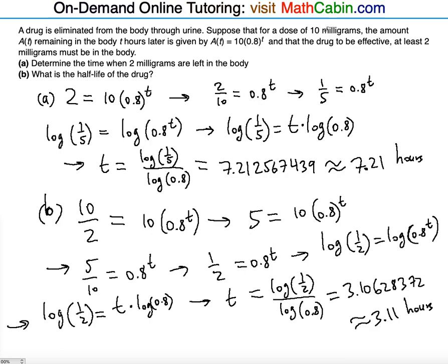The time it takes for one half of the original amount of the drug to remain in the body. So in three hours, there will be exactly one half, 5 milligrams left in your body if you take 10 milligrams. And it's consistent what we've suspected before, that it has to be smaller than the 7 hours that we had for the 2 milligrams to remain.